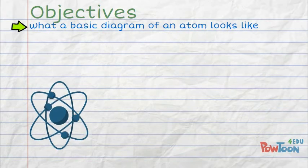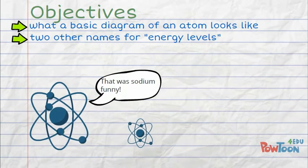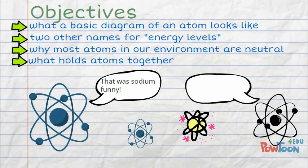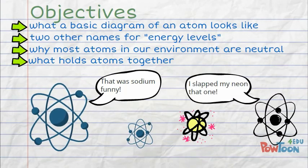Did you get all the objectives in your notes? What a basic diagram of an atom looks like. Two other names for energy levels. Why most atoms in our environment are neutral. And what holds atoms together.